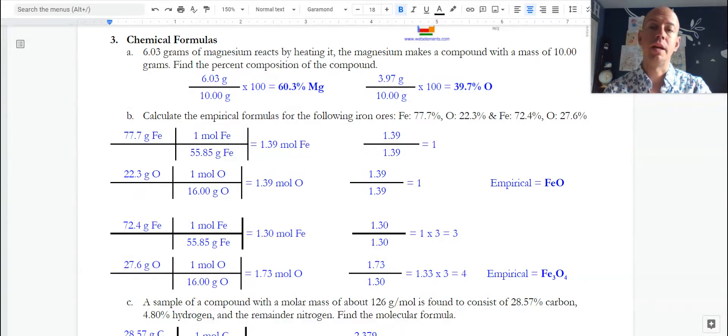In our first problem here, we have six grams of magnesium. It reacts by heating it and it makes a compound. Find the percent composition. It tells us the compound is 10 grams.